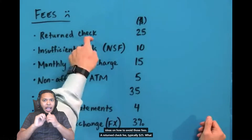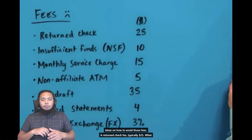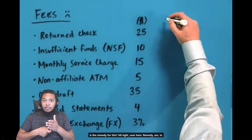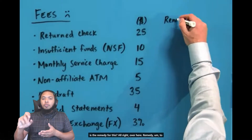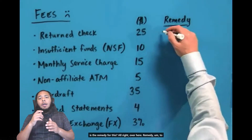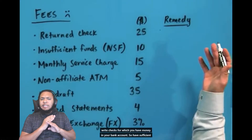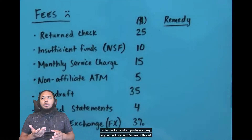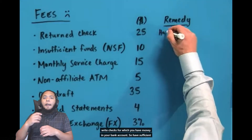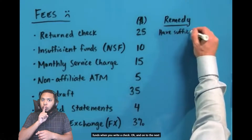So a returned check fee — typically $25. The remedy: write checks for which you have money in your bank account. Have sufficient funds when you write a check.